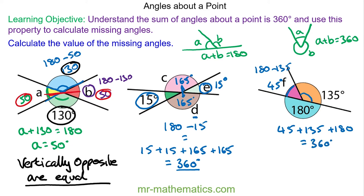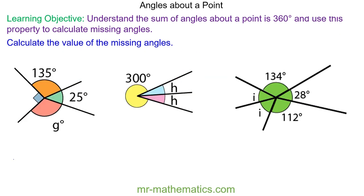Okay, let's try some more questions. Try to work out angle g, angle h, and angle i by pausing the video, and you can resume it when you're ready. For question g, we know all four angles are angles about the point, which means they will add up to 360.